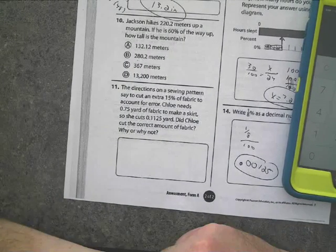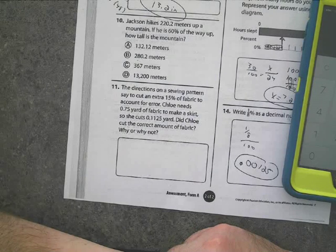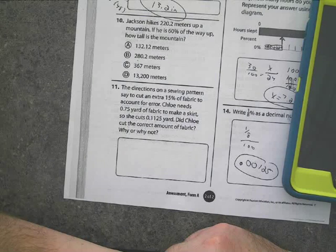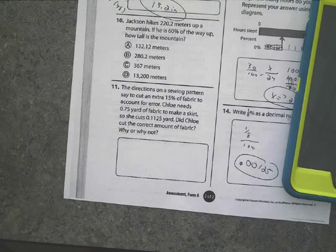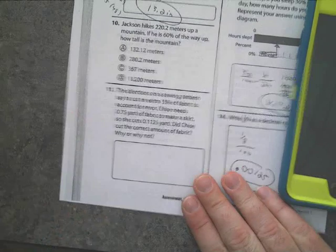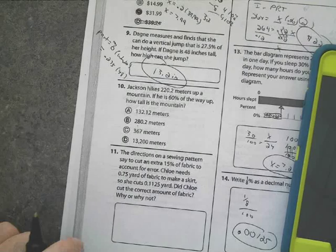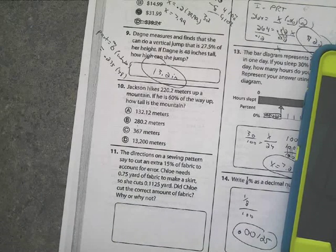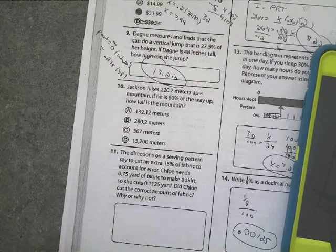Jackson hikes 220.2 meters up a mountain. If he's 60% of the way up, how tall is the mountain? Now here's the thing, it's not telling me in here at all how I need to set up the problem. It's not limiting me and telling me, please do part equals percent whole. I look at this question.